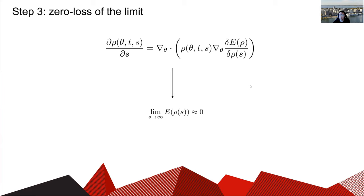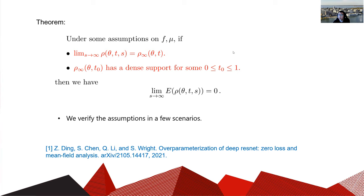The last step involves the study of the gradient flow for rho. We want to show that the cost function converges to zero when s is large enough under some assumptions. For the global convergence result, we prove that the cost will converge to zero under two conditions: first, rho(s) converges to some limit rho_infinity; and second, the limit rho_infinity has dense support for some t_0. This suggests that if rho converges to a set point or local minimum, and if the limit point has dense support at some t, then this limit point is the global minimum. In our recent paper, we also give conditions under which these assumptions can be satisfied.